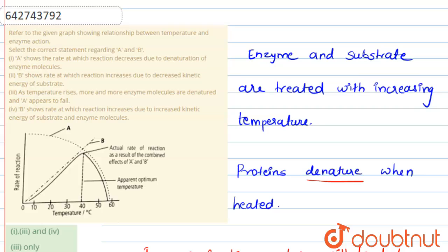Statement 3 says: as temperature rises, more and more enzyme molecules are denatured and A appears to fall. As we can see in the graph, A appears to fall because of increasing denaturation of enzyme molecules, causing the overall rate of reaction to come down. So statement 3 is also correct.